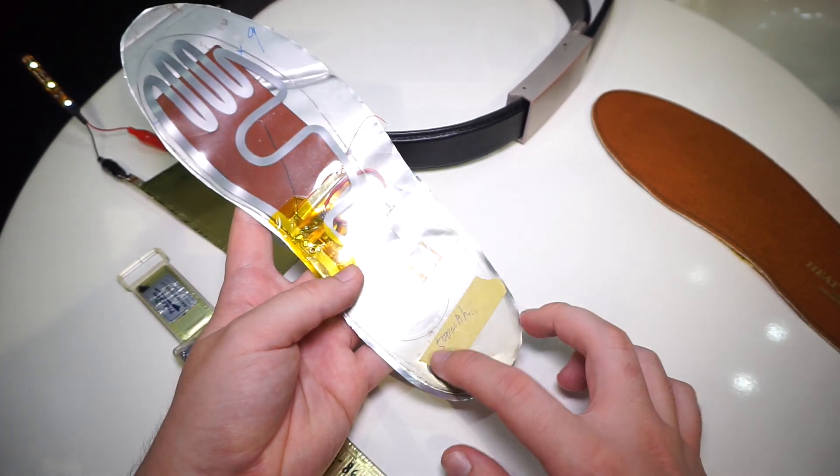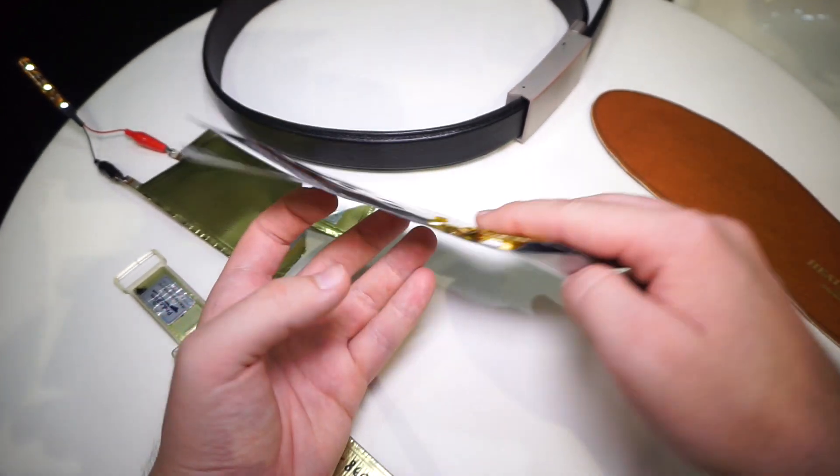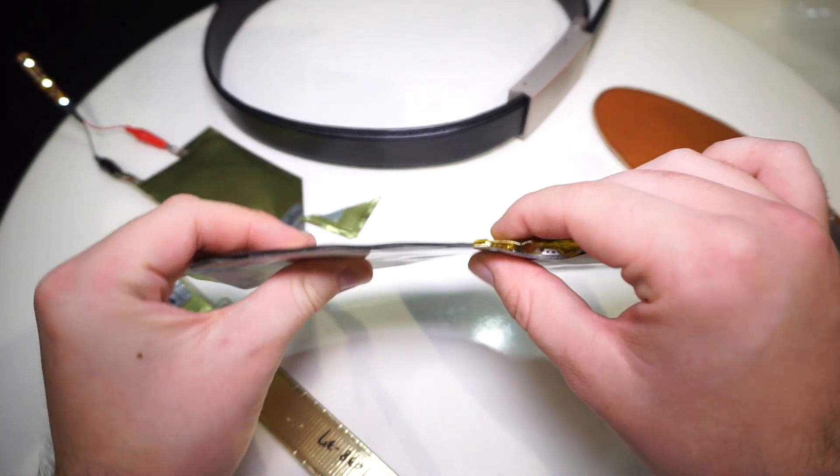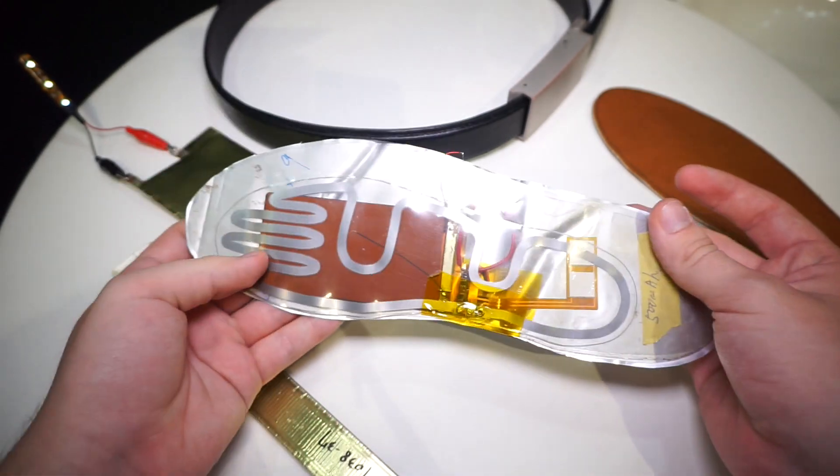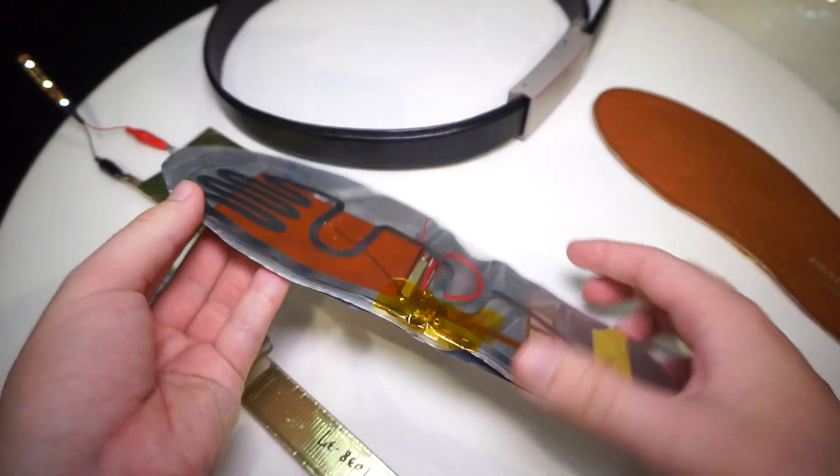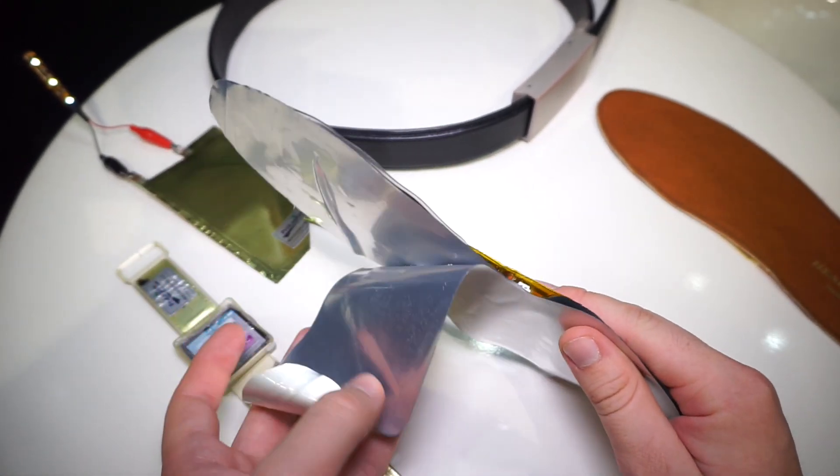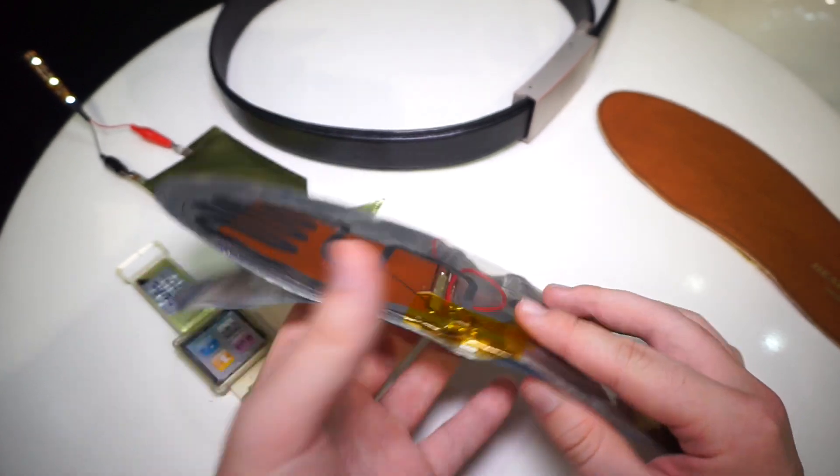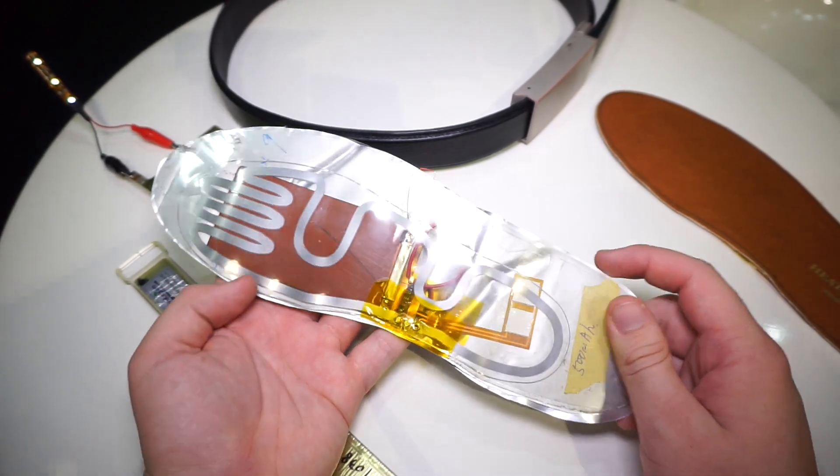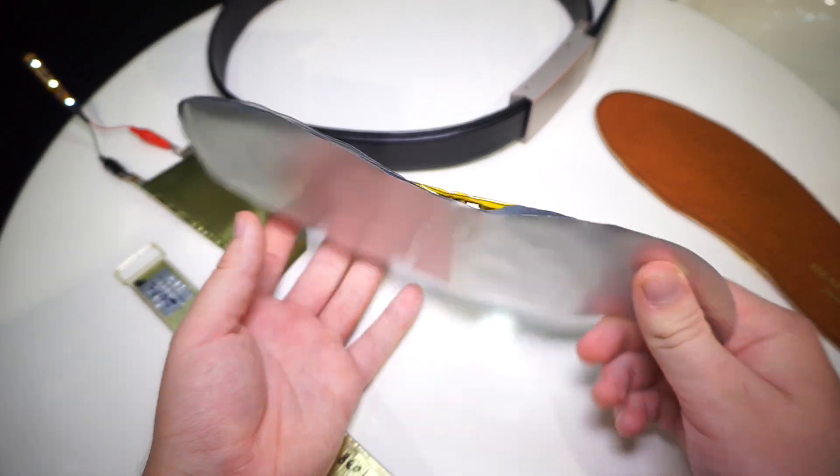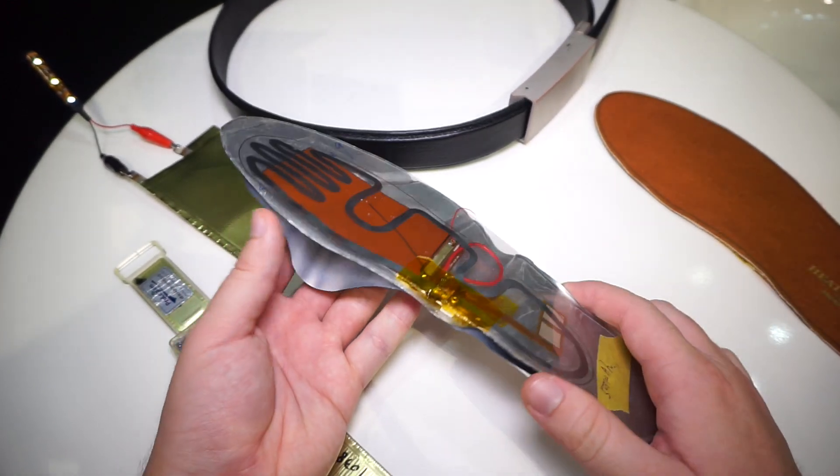We have a battery of 500 mAh inside this super thin insole. It's also a bit flexible. It could be quite useful if you're going somewhere cold like Siberia or Alaska and you want to have your feet comfortable and warm.